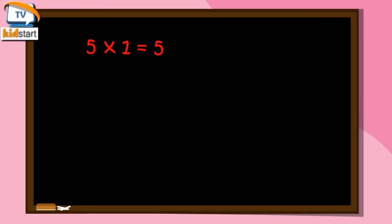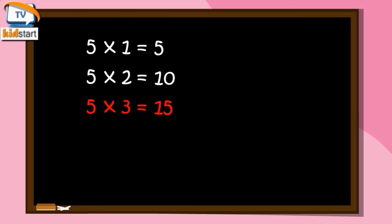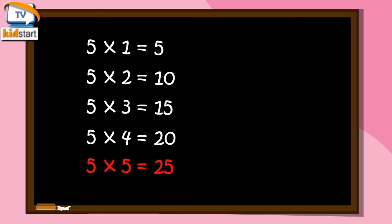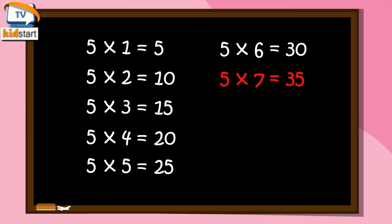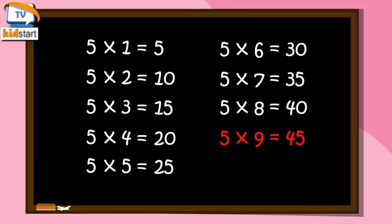Five ones are five. Five twos are ten. Five threes are fifteen. Five fours are twenty. Five fives are twenty-five. Five sixes are thirty. Five sevens are thirty-five. Five eights are forty. Five nines are forty-five. Five tens are fifty.